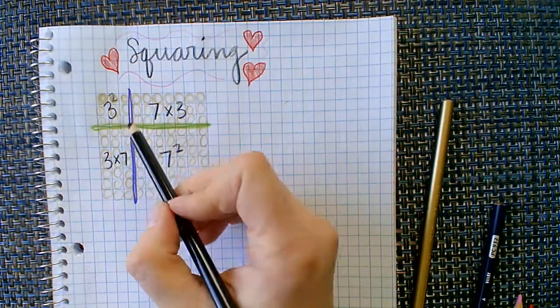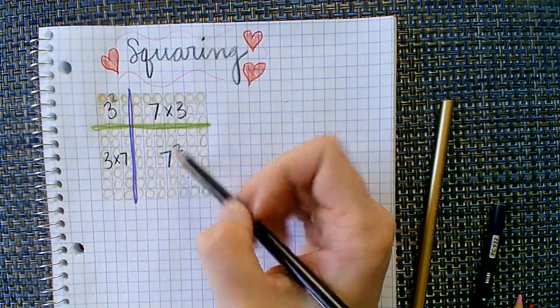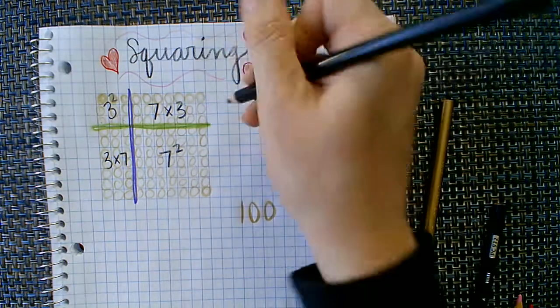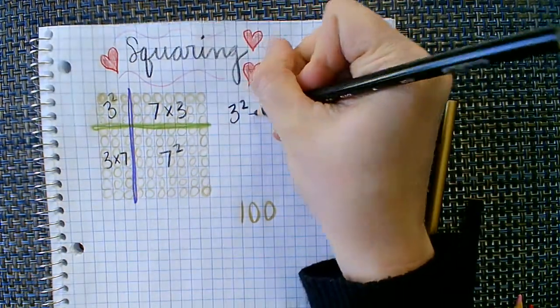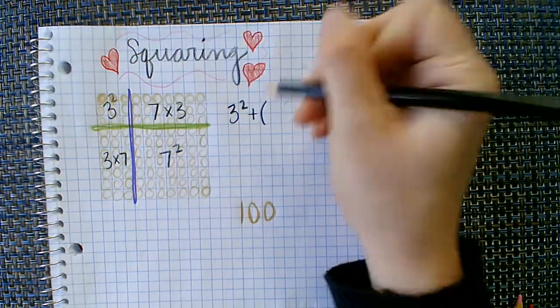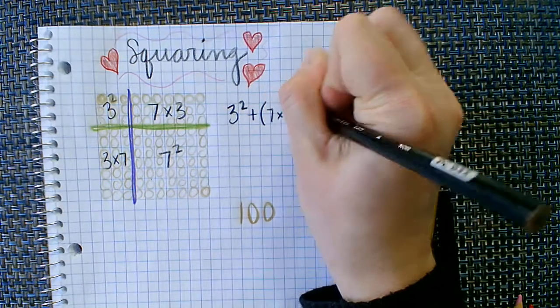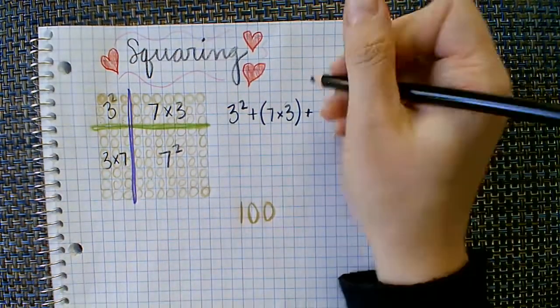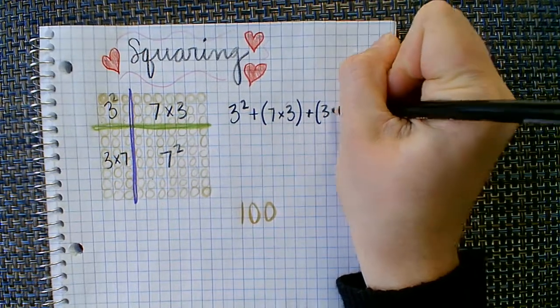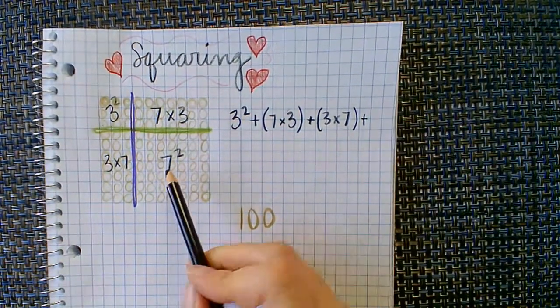So we can take each of these pieces that we have and how we've labeled them. So for example, three squared, and we can add them together. Three squared plus, we're going to put this in parentheses, seven times three plus three times seven plus seven squared.